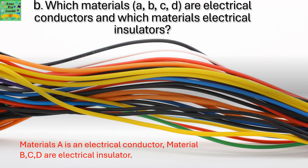Which materials A, B, C, or D are electrical conductors and which are electrical insulators? Material A is an electrical conductor, but materials B, C, and D are electrical insulators. That is why the lamp won't light up — because the circuit won't work.